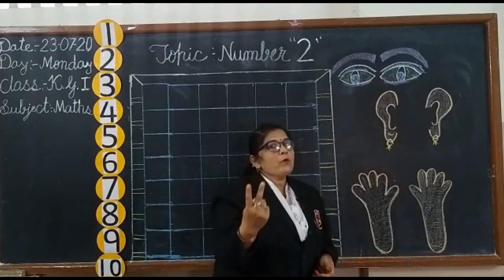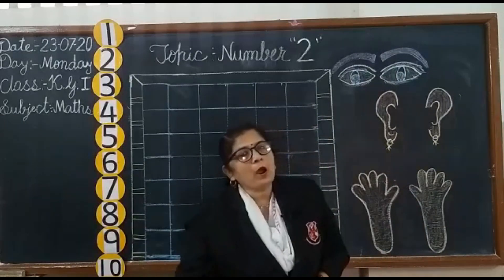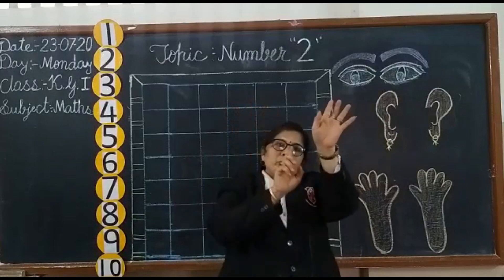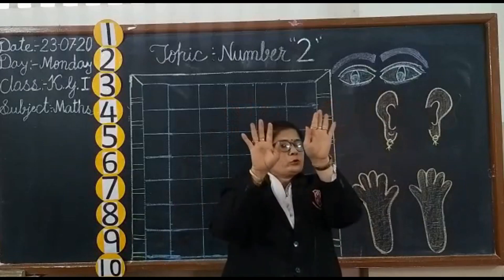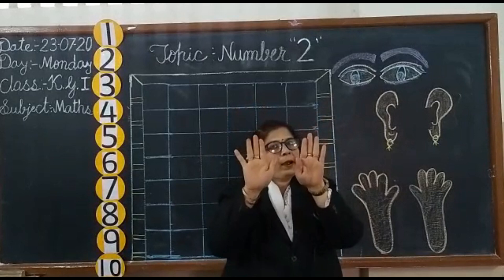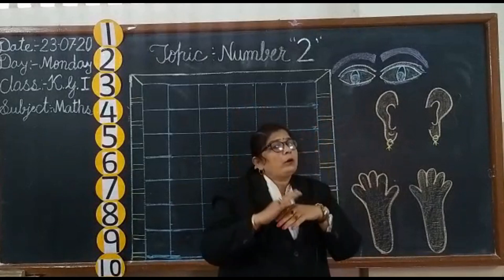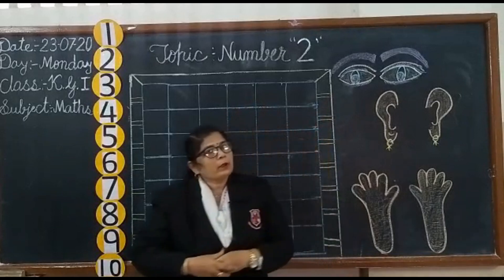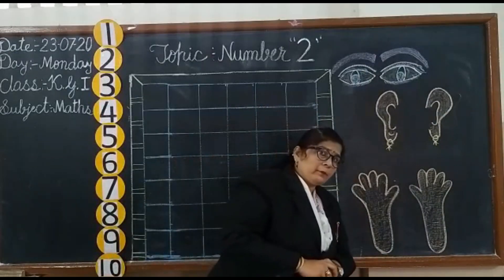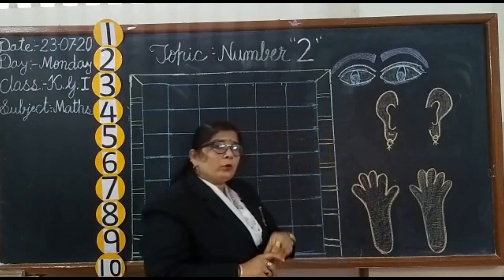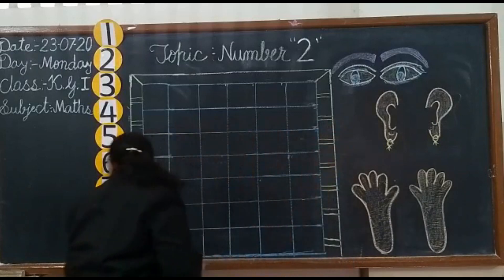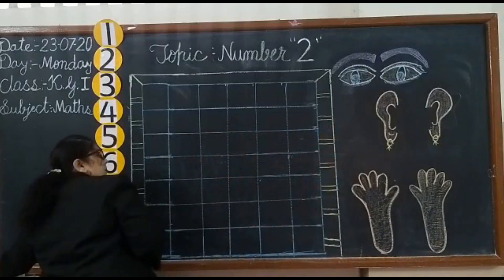Now we will count hands. 1, 2. So we have 2 hands. Now another method is, if you want to count something, you will write the number beside it, like this.